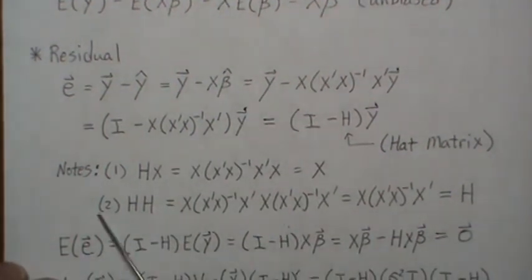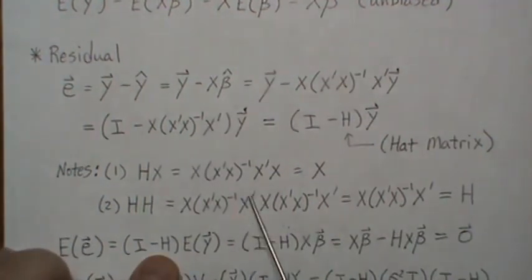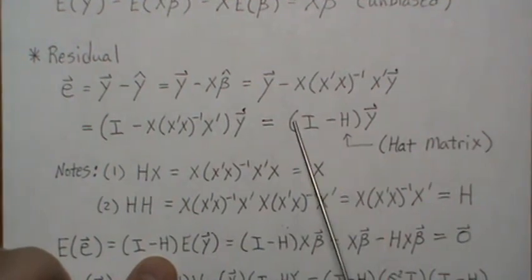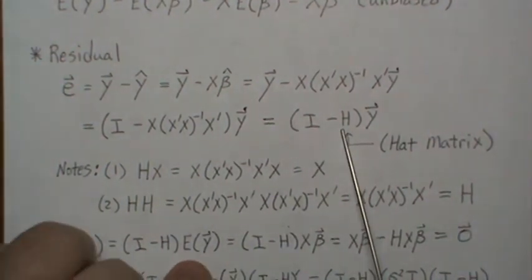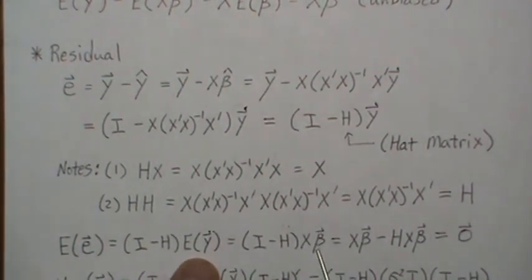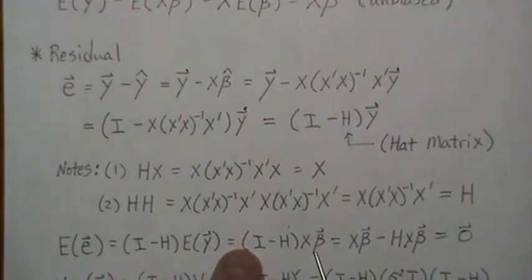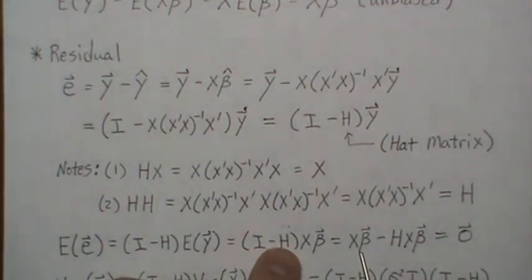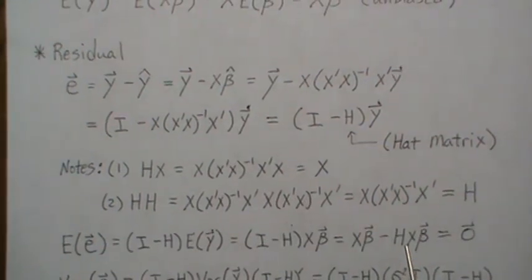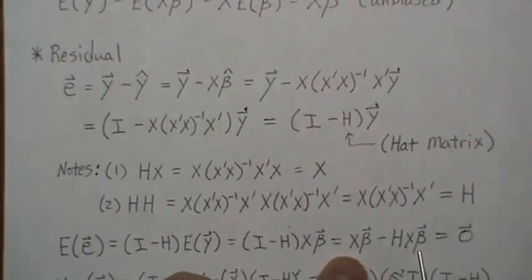Now let's look at the expected value of the residual. The residual in matrix form is I minus H times Y. Since I minus H is constant, it comes out and we take the expected value of Y, which is X beta. Identity times X beta is X beta, and H times X beta equals X beta since Hx equals X. So we get X beta minus X beta, which is zero. The expected value of the residuals is zero.